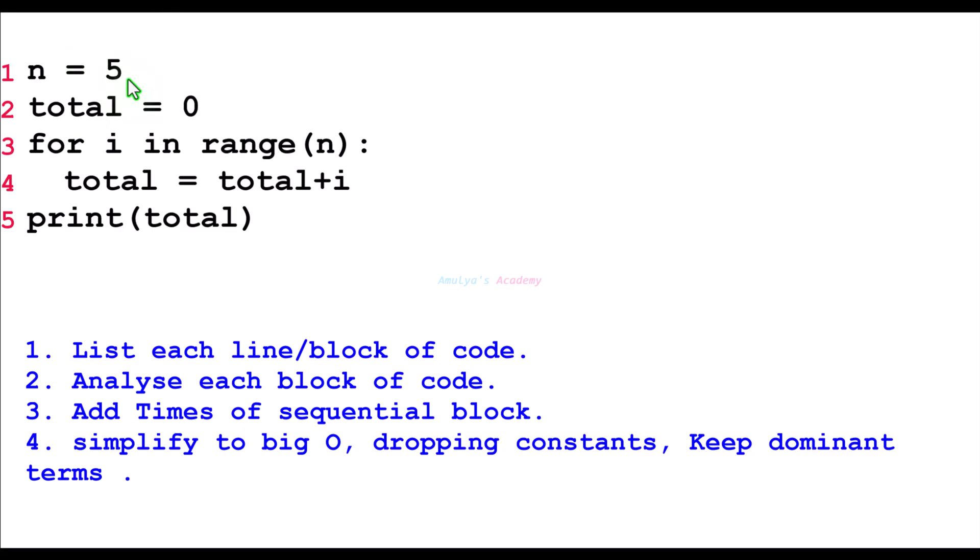So here, this is the first line, second line, third line, fourth line, and fifth line of our program. You can treat this as one block: the for loop and its body like this. And here in the first line, this is a variable assignment. We are assigning a variable. It is a simple operation, so it takes constant time, so we can take Big O of 1. Here also variable assignment, so constant time, Big O of 1.